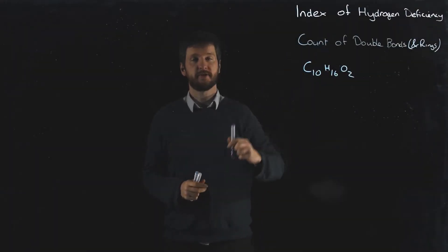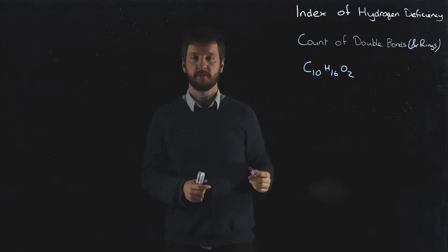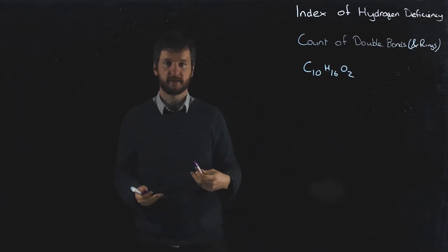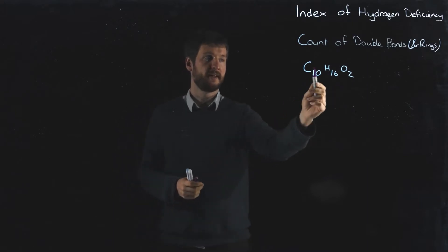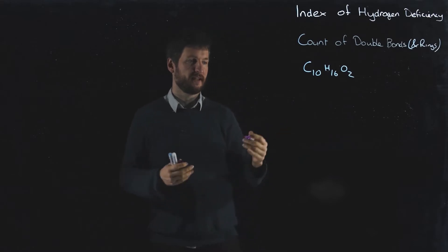Okay, we're going to do the index of hydrogen deficiency calculation, or in other words, we're going to have a count of the number of double bonds or rings within our molecule. This is useful for converting a molecular formula into a structure - it's definitely one piece of the puzzle.